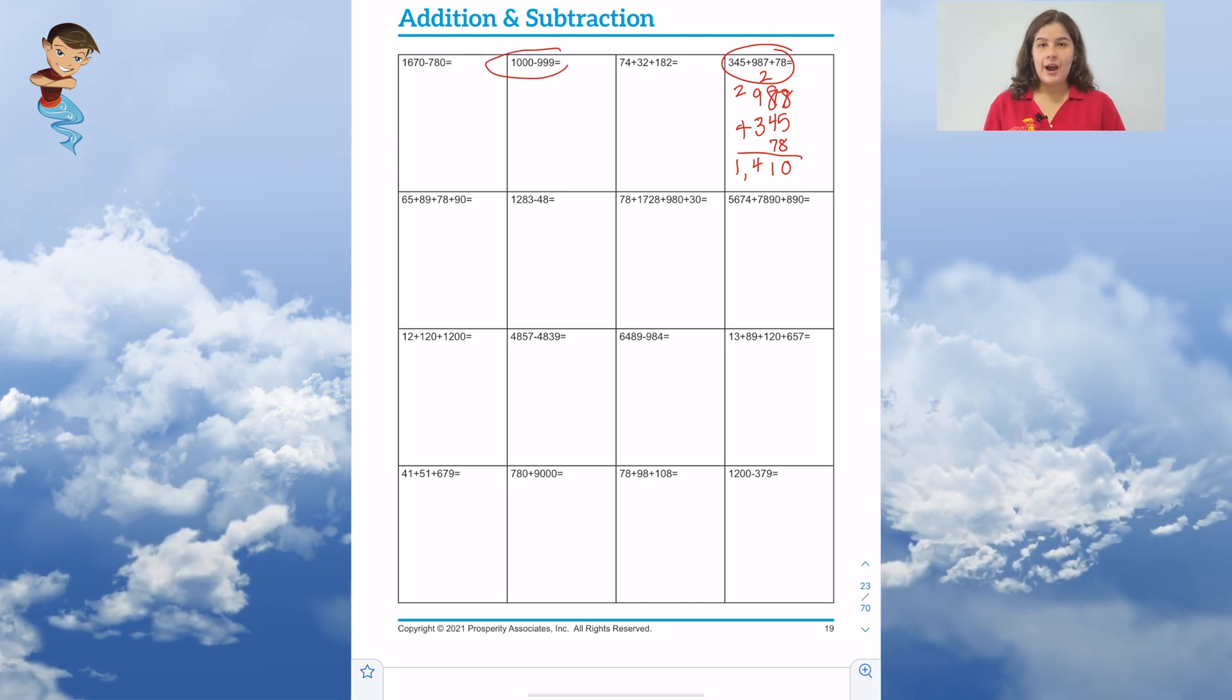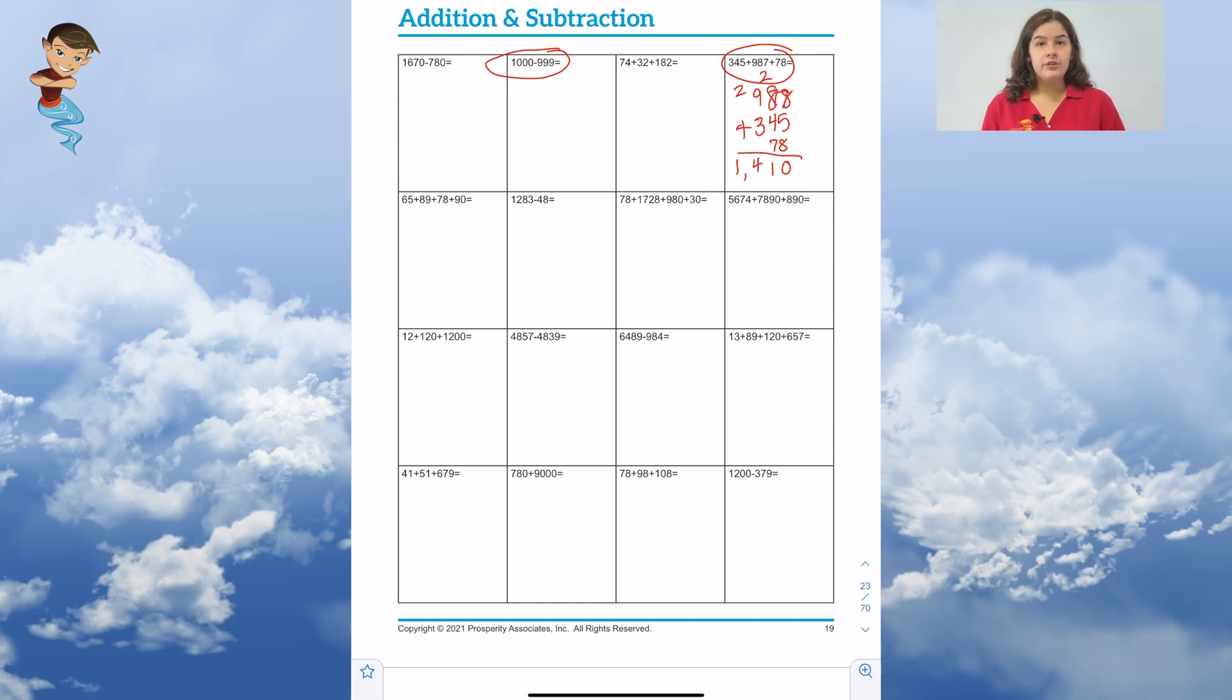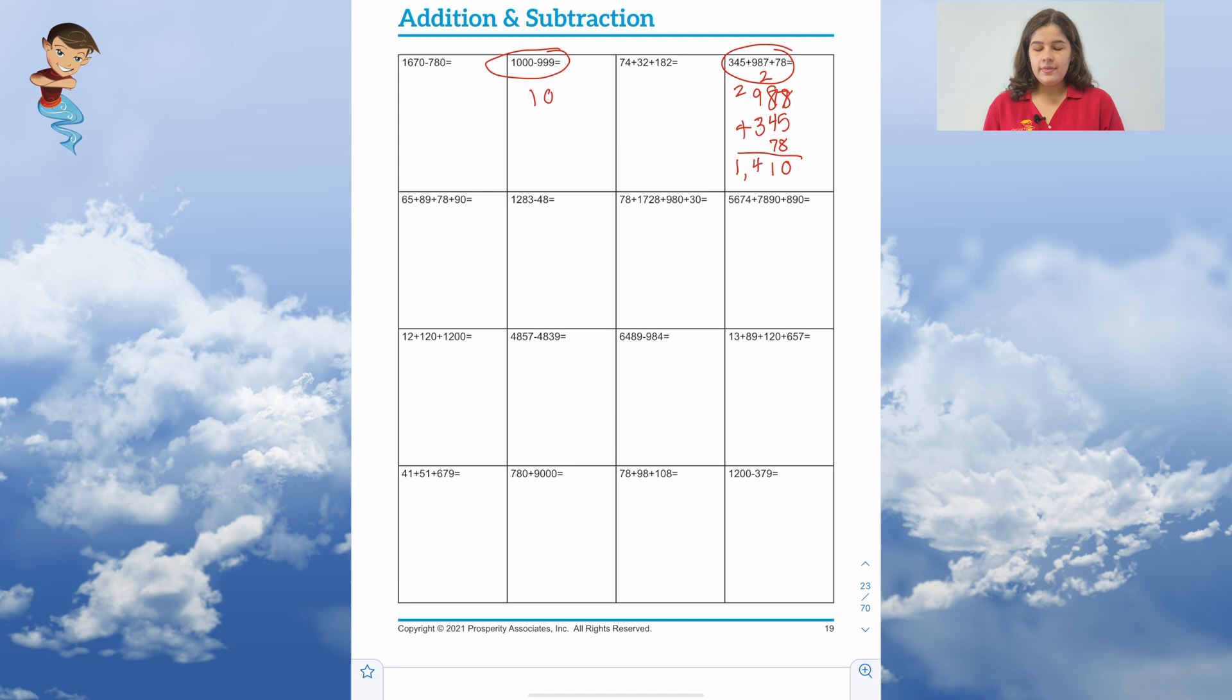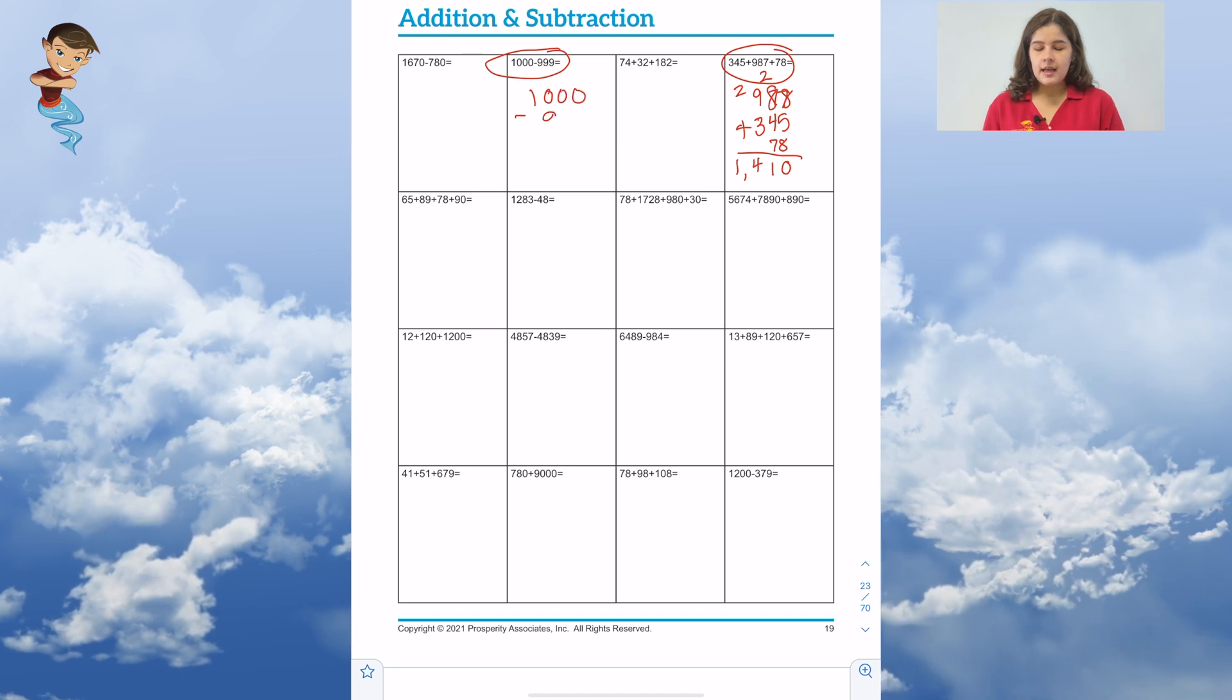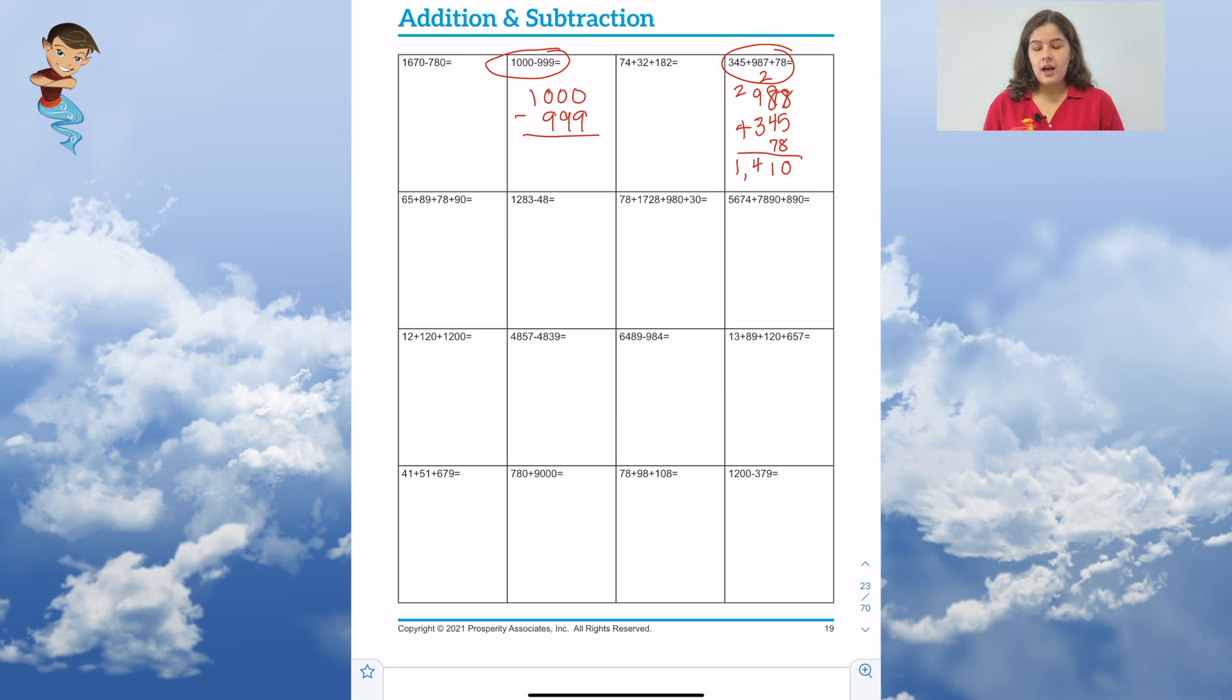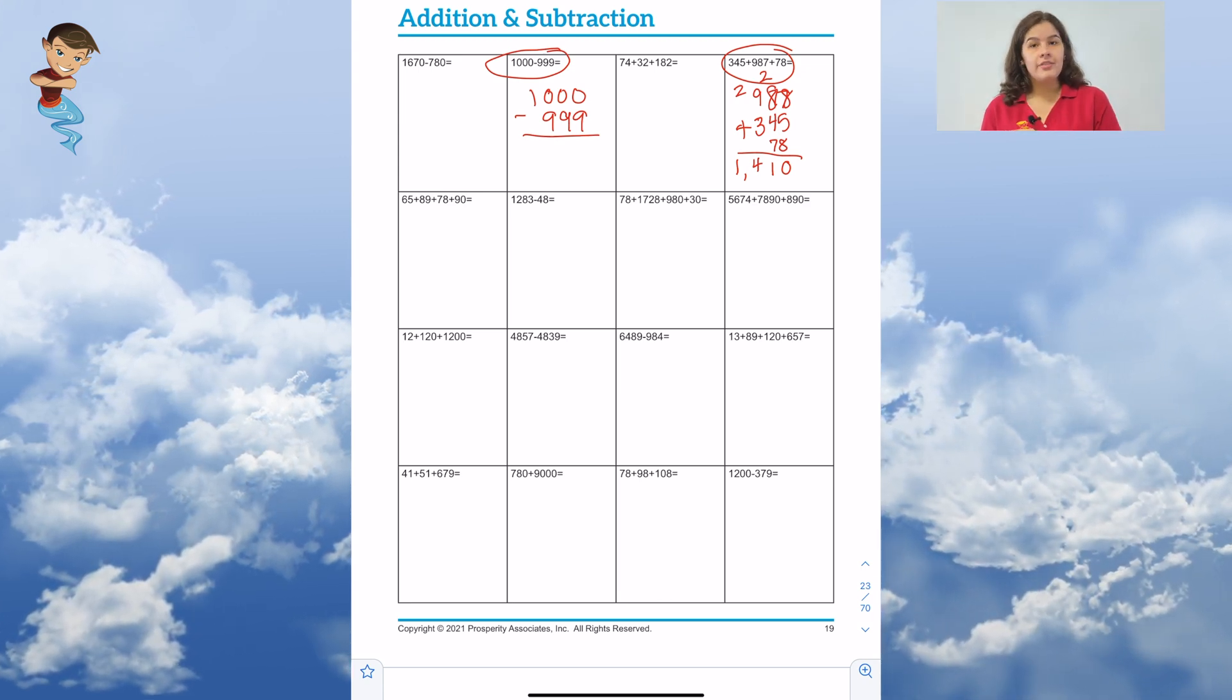Now let's try a subtraction problem. I typically see a lot of students have forgotten how to regroup or borrow, so this is a good test of that skill. 1,000 minus 999. Since we have 9 underneath all of our zeros, we know that we need to borrow all the way from our thousands place.